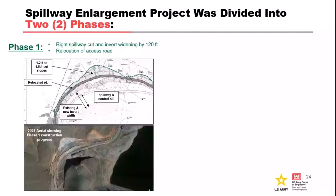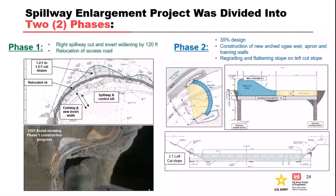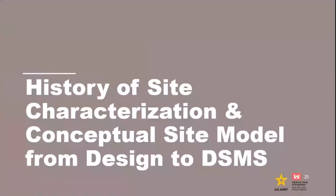Here are the two phases. You can see the 2001 construction photo where the widening cut was being made on the right side — that was already in contracting. We're going to focus on Phase 2 at 35% design, which was the structure, the walls, and the layout of the proposed facility.